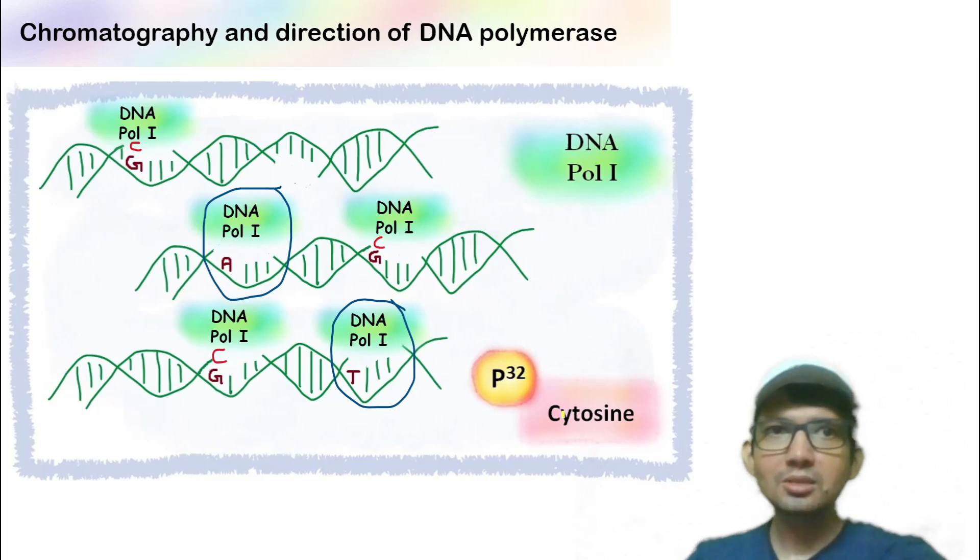At other locations where guanine is absent, the polymerase will keep waiting for the complementary nucleotide. But since other nucleotides are absent, nothing will be added here.